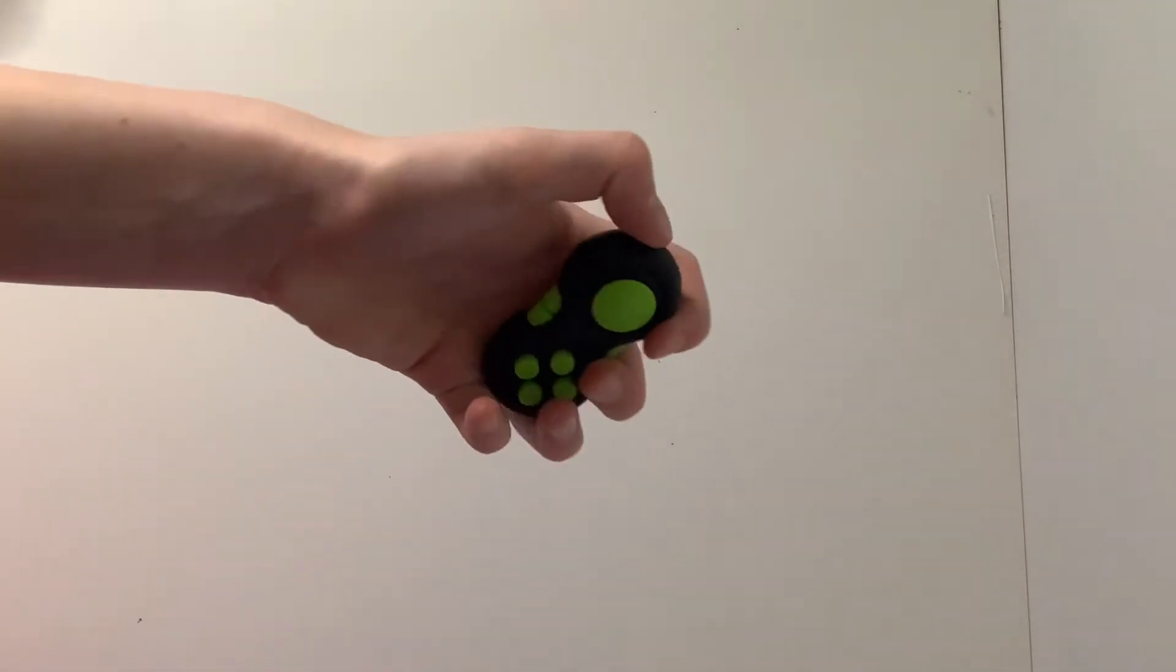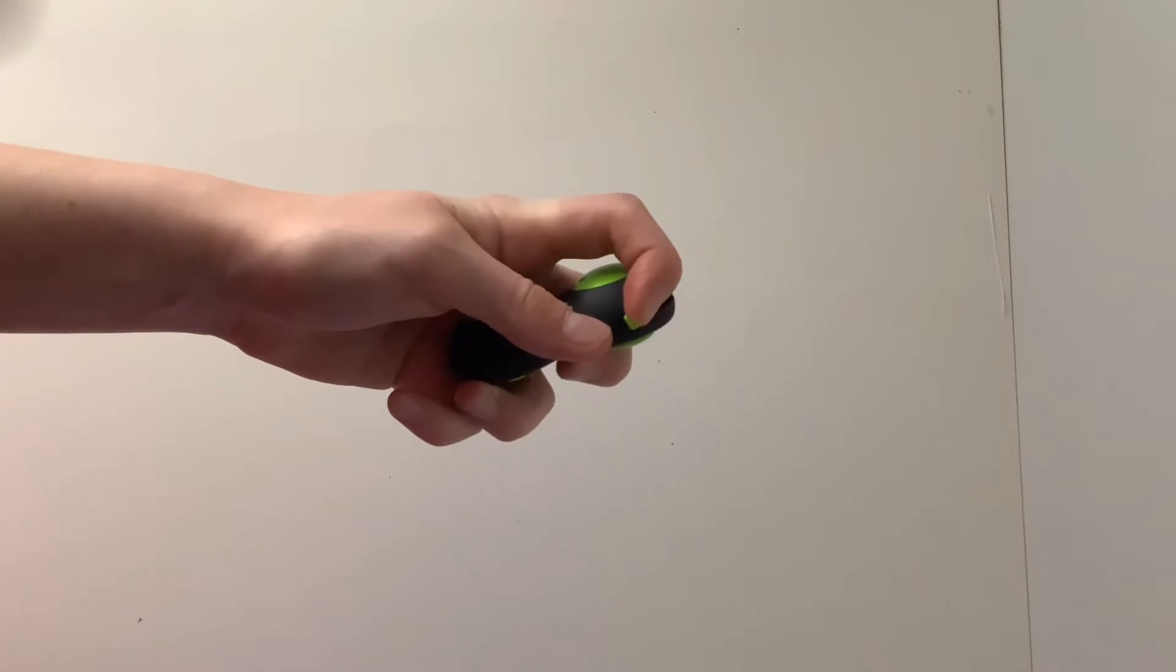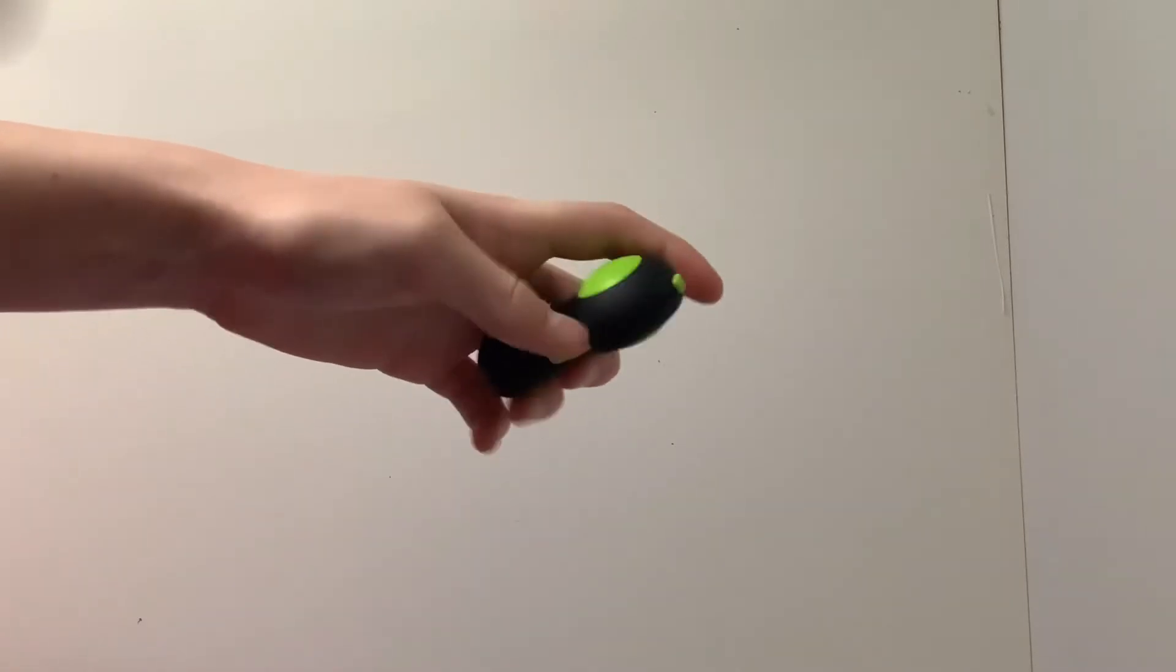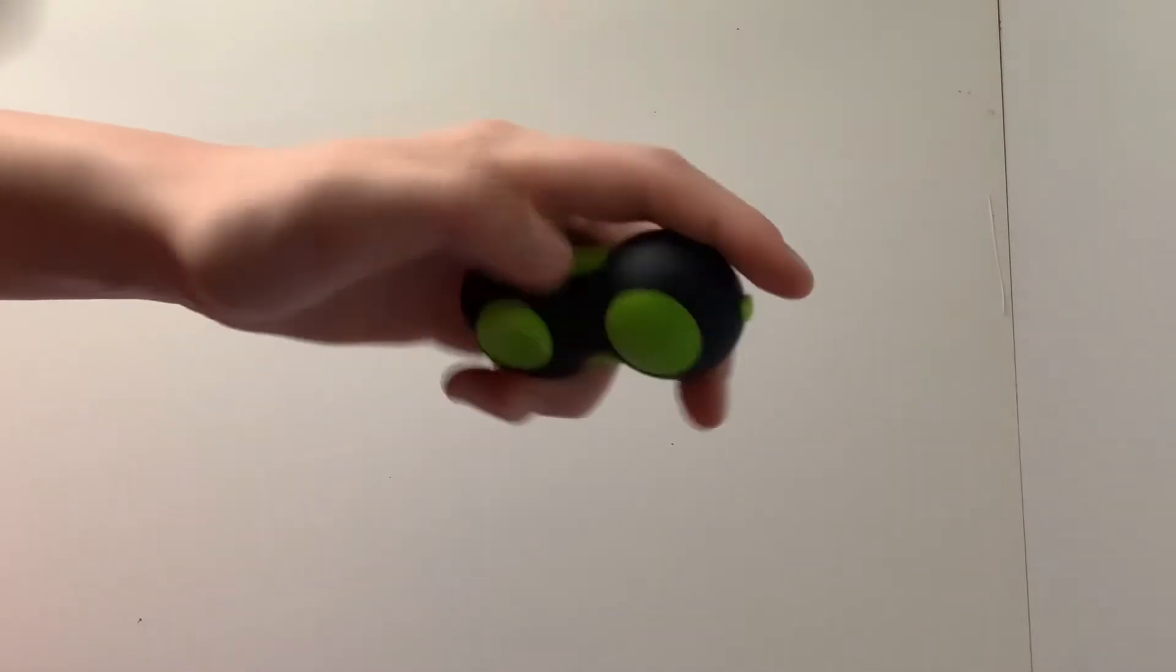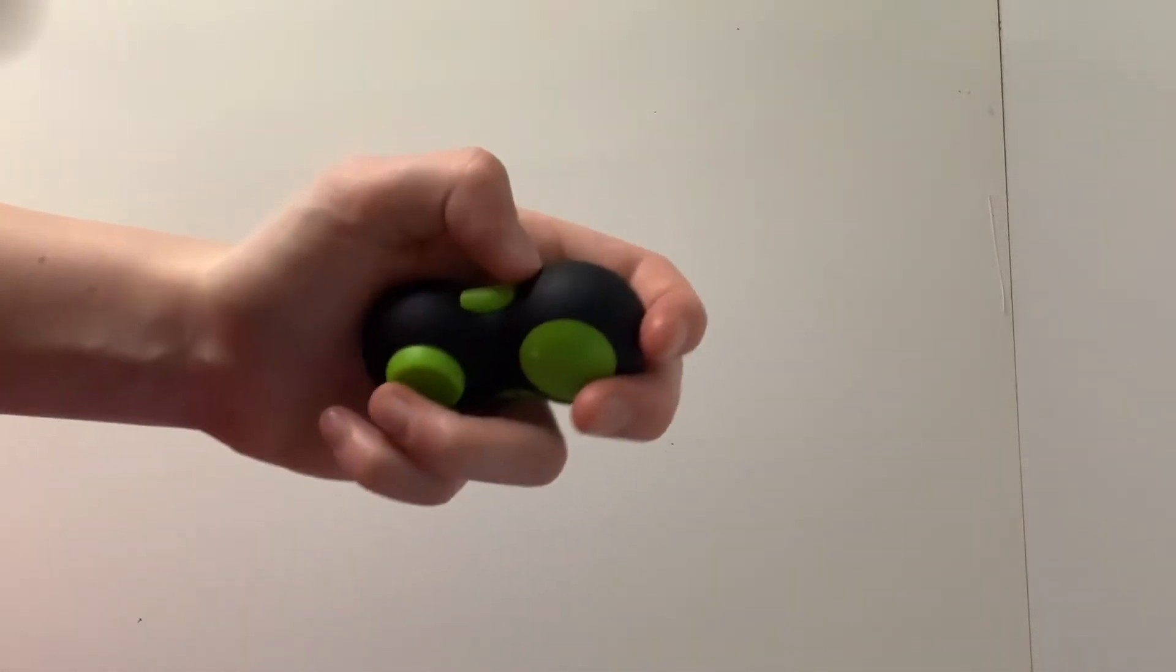Then you also have this little kind of lever thingy, also has texture, and then a little textured spot.